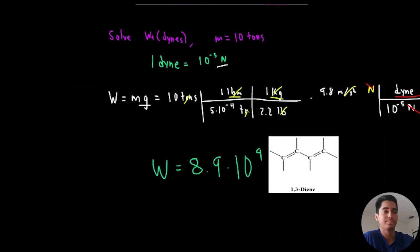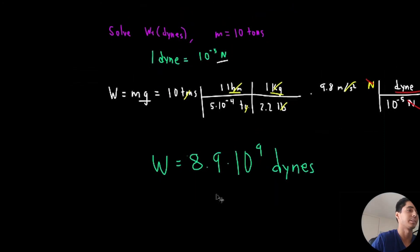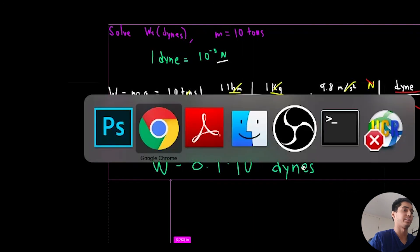Yowza. 10 to the 9. 8.9 times 10 to the 9 dynes. No? You don't like that one? Can you give me at least a break? Dyne? Fine. Get rid of it. 8.9 times 10 to the 9 dynes.